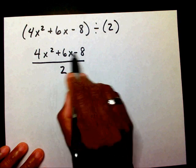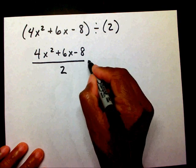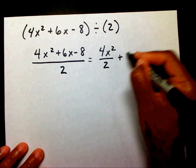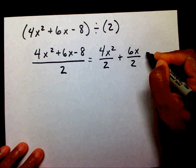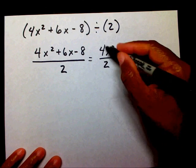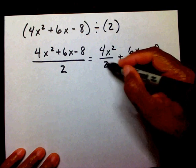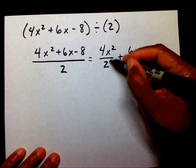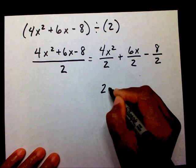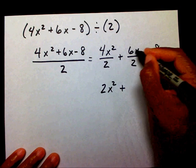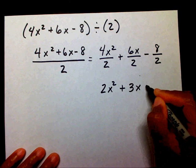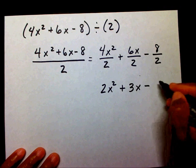So what I'm going to do, I'm going to divide each term by 2. So I'm going to say 4x squared divided by 2 plus 6x divided by 2 minus 8 divided by 2. Now I'm just going to reduce my fractions here. So that's going to be 4 divided by 2 is 2x squared, plus 6x divided by 2 is 3x, minus 4 divided by 2 is 4.